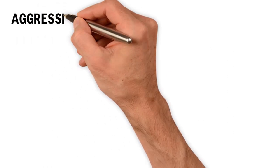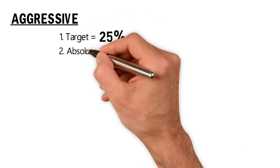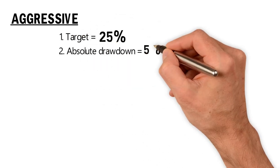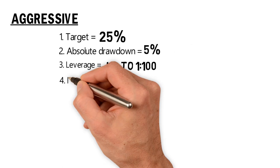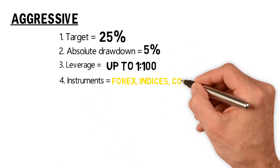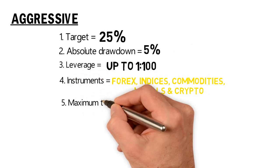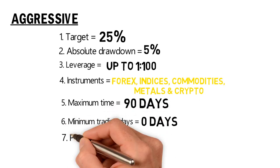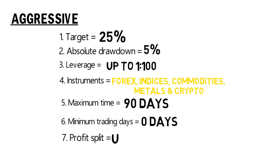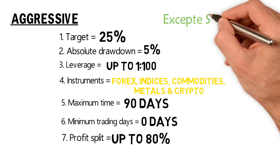In Aggressive mode of the Evolution program, the profit target is 25%, drawdown is the same, and the leverage is 1:200. Instruments are the same, and the maximum time limit is 90 days. The fees are the same and everything else is the same, except the scaling plan is different for the Aggressive mode.